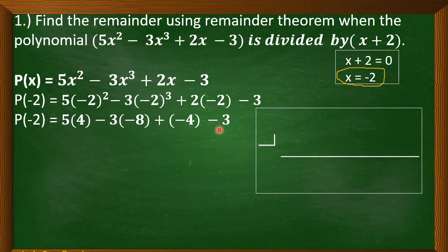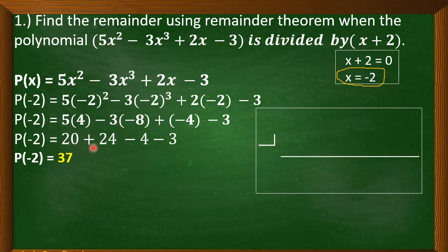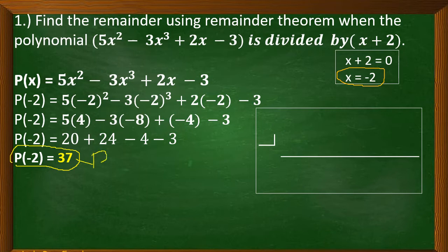Bring down negative 3. Now let's simplify further. So we have 5 times 4 is 20. Negative 3 times negative 8 is positive 24. Positive times negative is negative 4. And bring down minus 3. Finally, 20 plus 24 is 44, minus 4 is 40, minus 3 is 37. So p of negative 2 is equal to 37, and this is also our remainder.